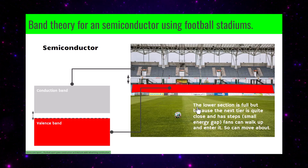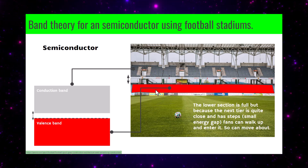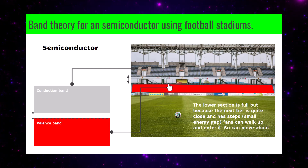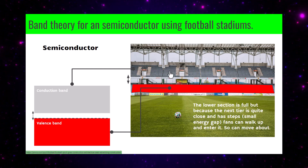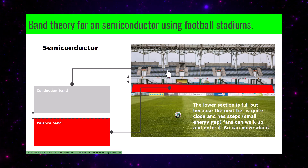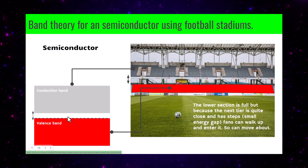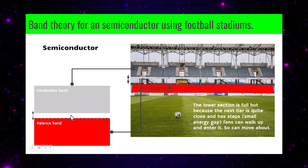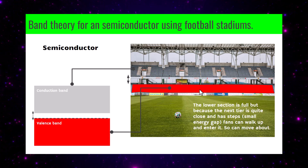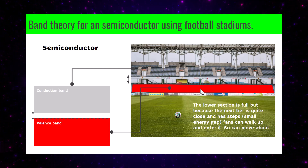For a semiconductor, the bottom tier is fully occupied, but there's just a small gap with stairs leading to the upper area where there are lots of free seats. That upper area represents the conduction band, the small staircase gap represents the energy gap, and the filled bottom tier represents the valence band. That stadium models a semiconductor.